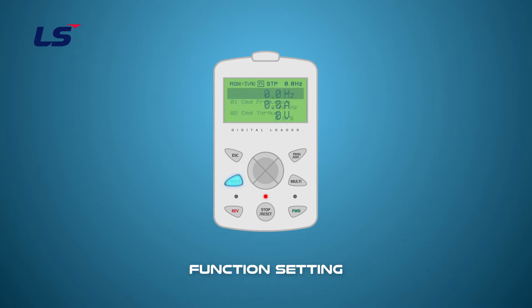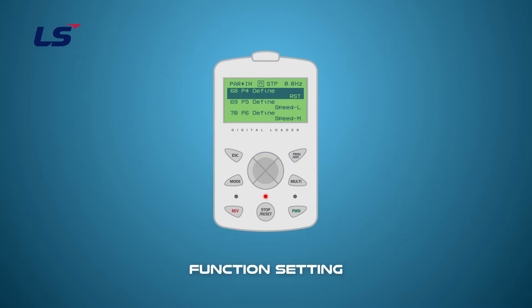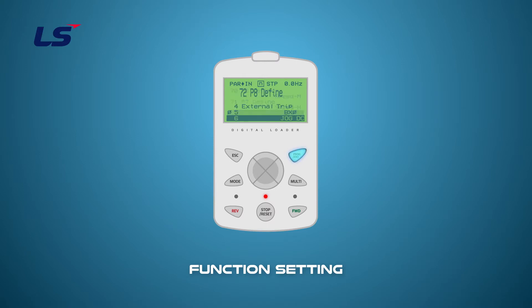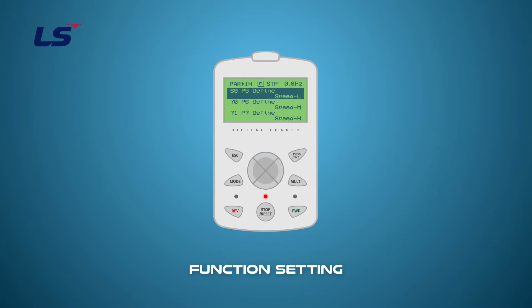Defining the multi-function terminal is a function that is performed when a signal is entered into the terminal. This function can be set at IN65 to IN72 of the IN group. The terminals P5, P6, and P7 are set to Speed-L, Speed-M, and Speed-H by default. In this video, the multi-function terminals for multi-step acceleration-deceleration are set as XCEL-L and XCEL-M on P4 and P8.